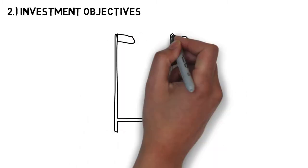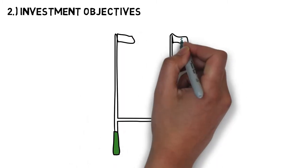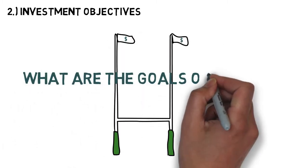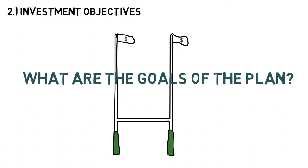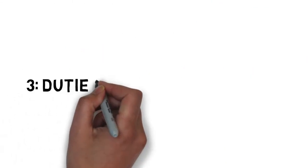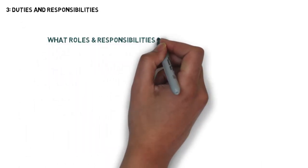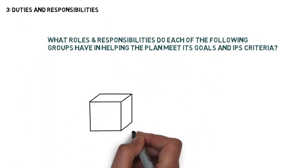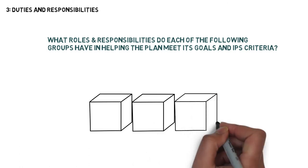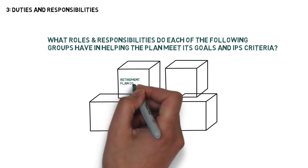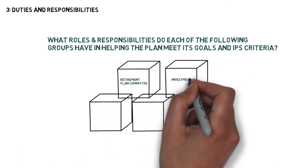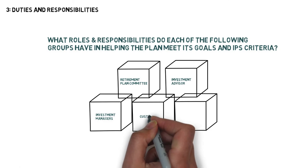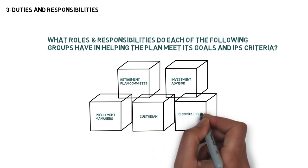Another question that must be answered when putting together an investment policy statement is: what are the goals of the plan? Next are the duties and responsibilities — what roles and responsibilities do each of the following groups have: the retirement plan committee, investment advisor, investment managers, custodian, and the record keeper and administrator?